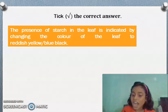This is our last question. The presence of starch in the leaf is indicated by changing the color of the leaf to reddish yellow or blue-black. What's your answer? Yes, it is blue-black.